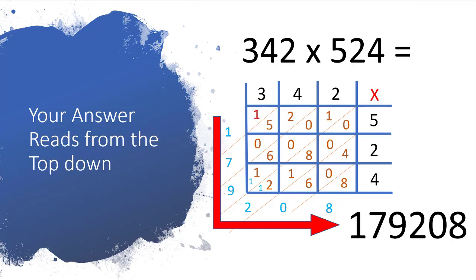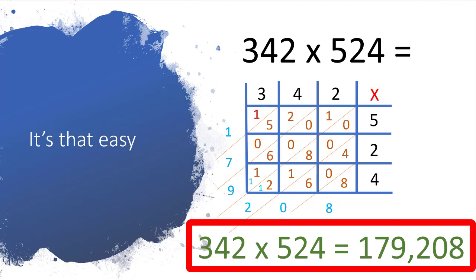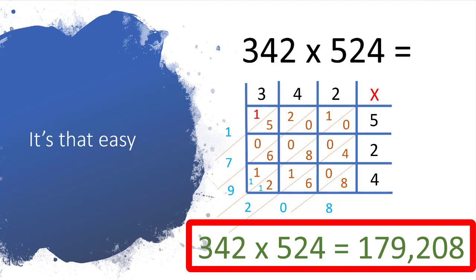So let's just have a look at that. We've got 342 multiplied by 524, that equals 179,208. And it is as easy as that.